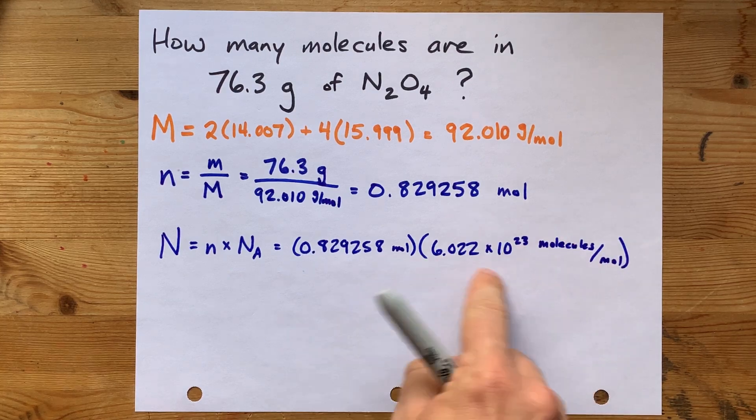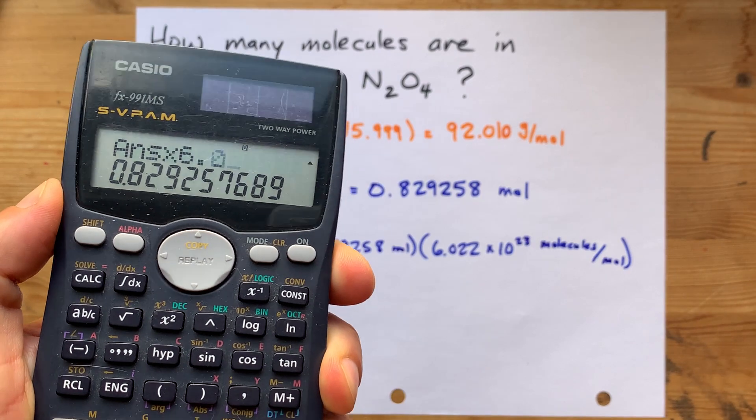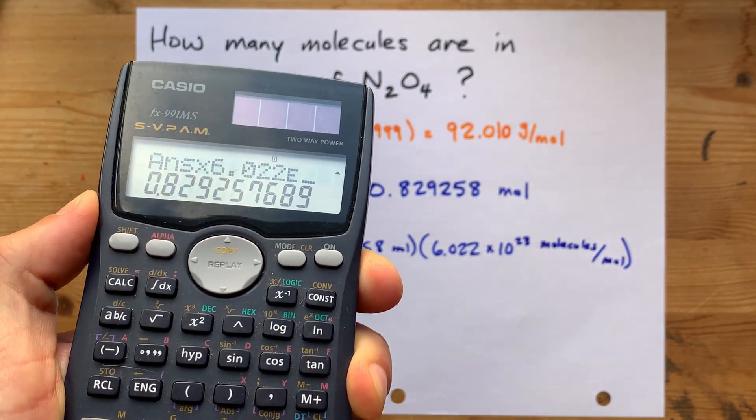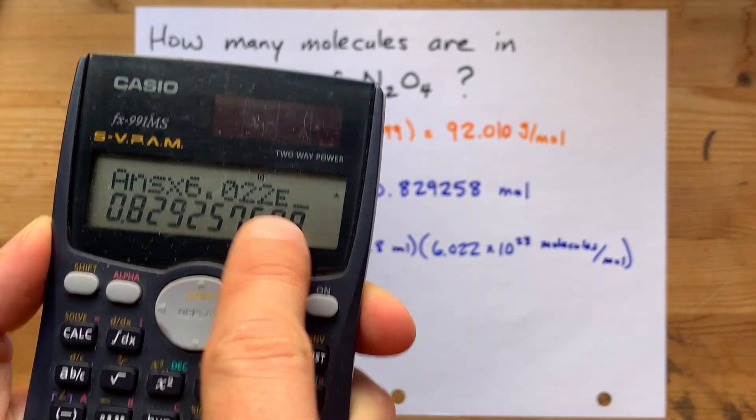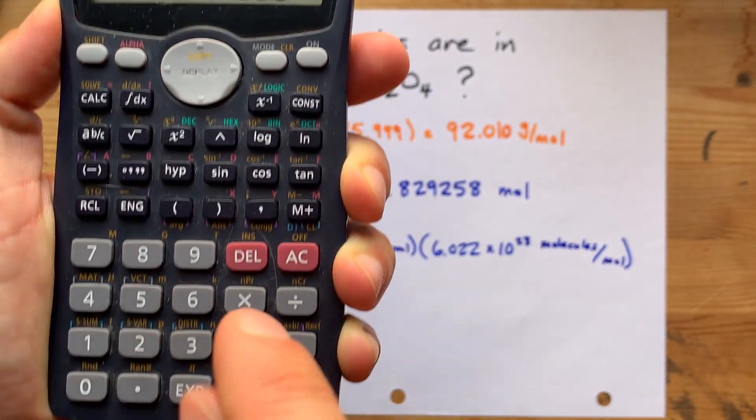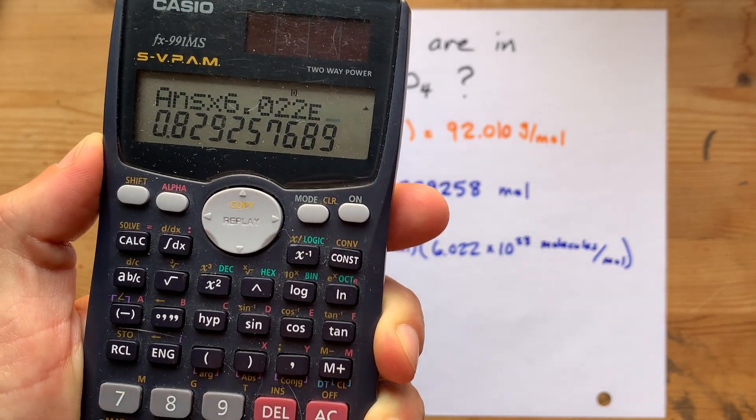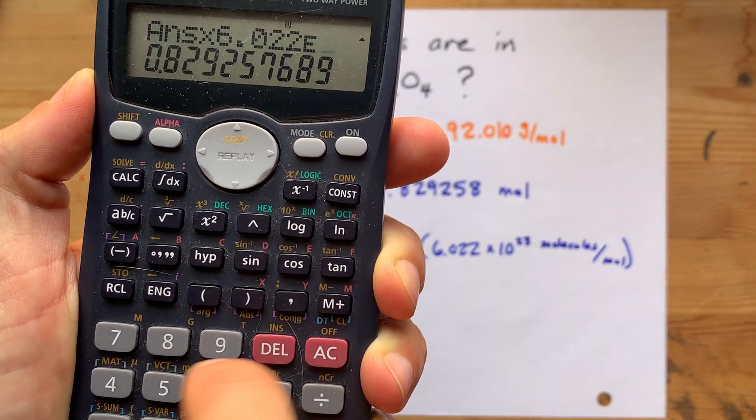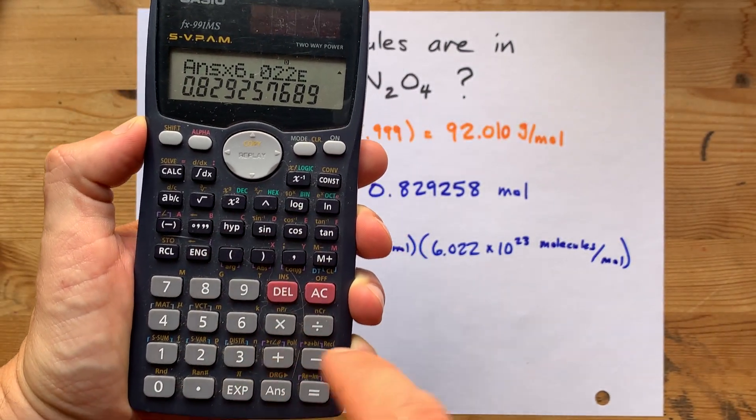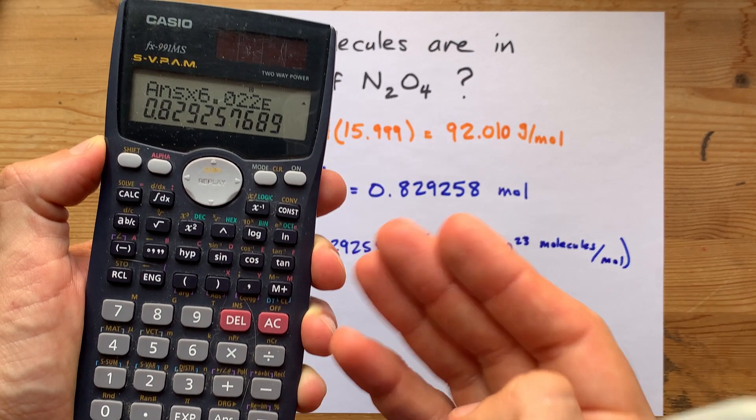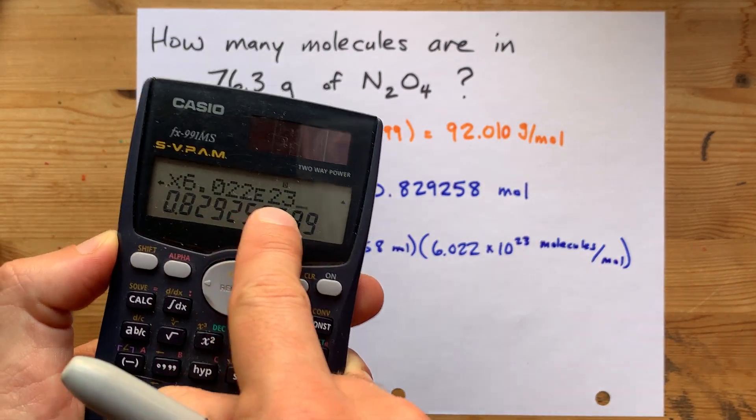But what matters is you're timesing by 6.022 times 10 to the power of 23. Now, I pressed the EXP button to get this capital E to show up. Your button might say double E or capital E, capital E. Or you can just write times 10 to the power of 23 on your own. But don't do times 10 and then also press E because then you're doing it twice and that's wrong. So, 6.022 times 10 to the 23.